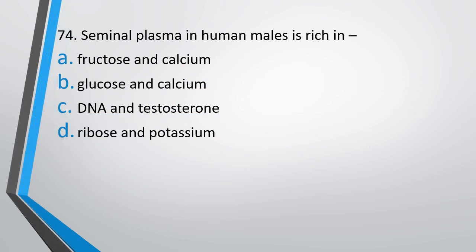Question number 74. Seminal plasma in human males is rich in: fructose and calcium, glucose and calcium, DNA and testosterone, ribose and potassium. The correct answer is option A, fructose and calcium.